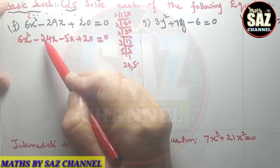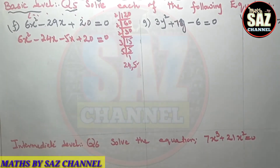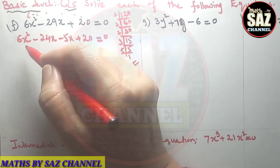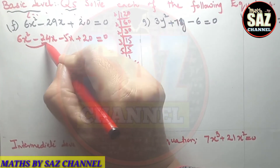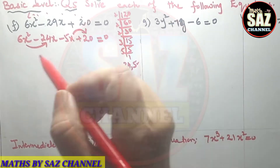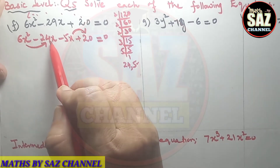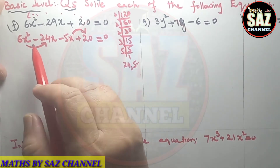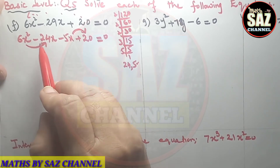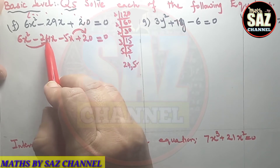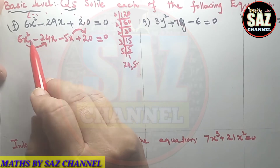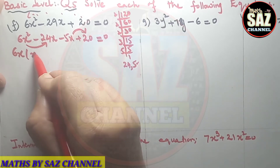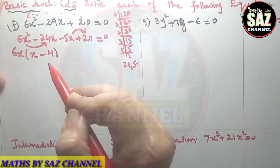The expression on the left-hand side is now solved by factorization by grouping. I divide it into suitable groups. From the first group, 6x² - 24x: from the letters, x is common; from the numbers 6 and 24, since 6 × 4 = 24, I extract 6x. Inside the bracket I am left with x - 4.